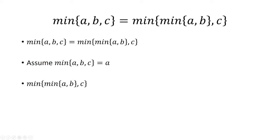The minimum of a and b becomes a since the minimum of a, b, and c is a. So now this is just the minimum of a and c, which is a since a is the minimum of a, b, and c.